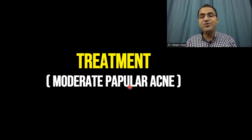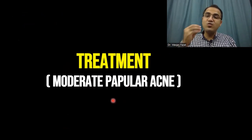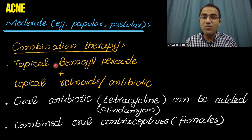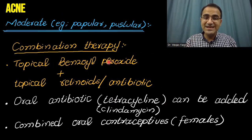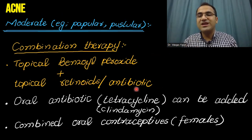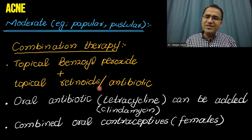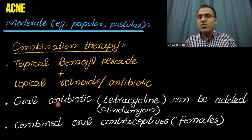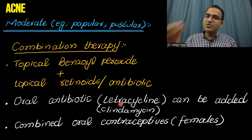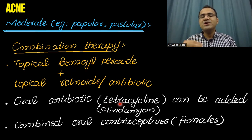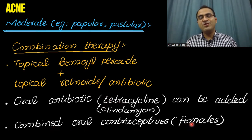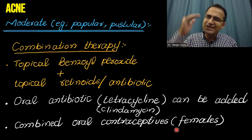For moderate papular acne — the form that has pus — combination therapy is needed: topical benzoyl peroxide applied twice daily with topical retinoid, or instead of retinoid, a topical antibiotic like clindamycin or erythromycin. If the acne is severe, you can add oral antibiotics like tetracycline, clindamycin, or doxycycline alongside the topical applications. Combined oral contraceptives can also be used in females to decrease acne.